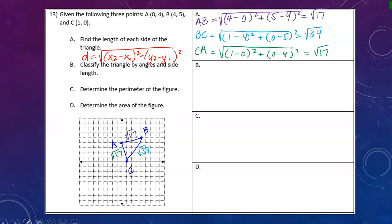Part B asks us to classify the triangle by angles and side length. Based on part A, this is an isosceles triangle because it has two equal sides. But I need to check the angles using the converse of the Pythagorean theorem. I'll add A squared and B squared and see how it relates to C squared.